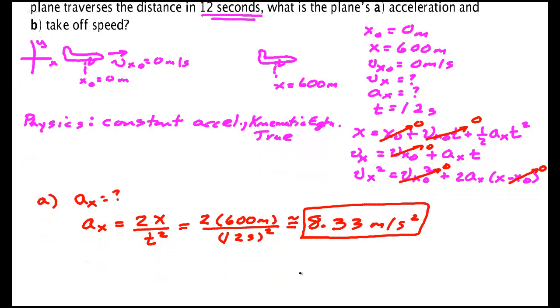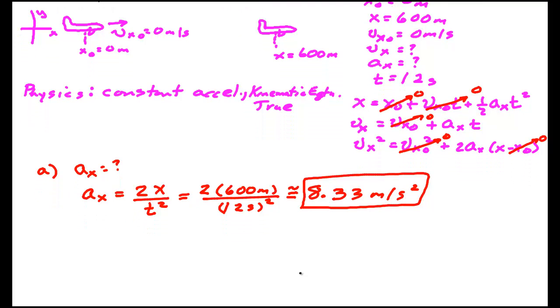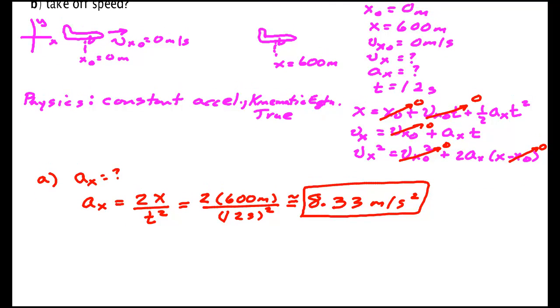Part B says find the takeoff speed. So for part B I'm looking for VX. Because it says speed, that's the absolute value of VX. But VX is going to be positive because I'm moving in the positive X direction, so there's no need to even put an absolute value on it. I need an equation that has VX. Well this one doesn't. These two do.